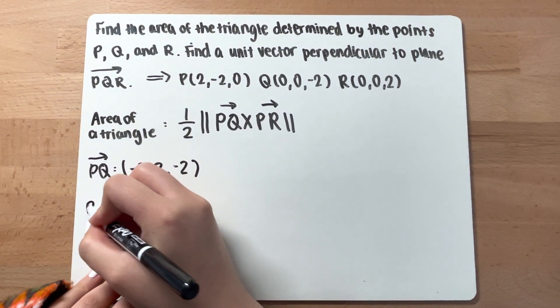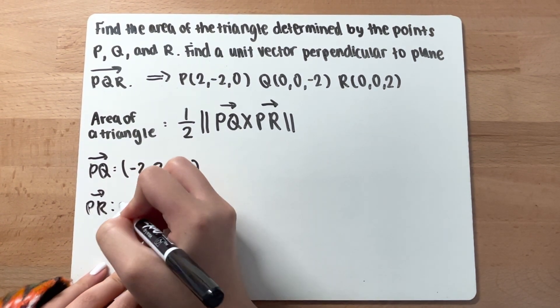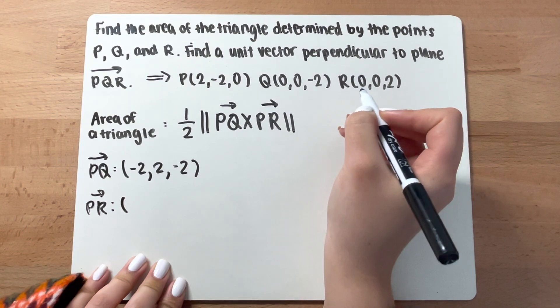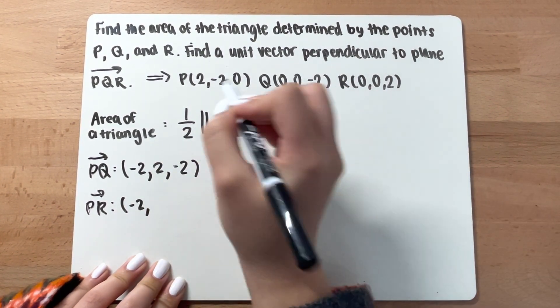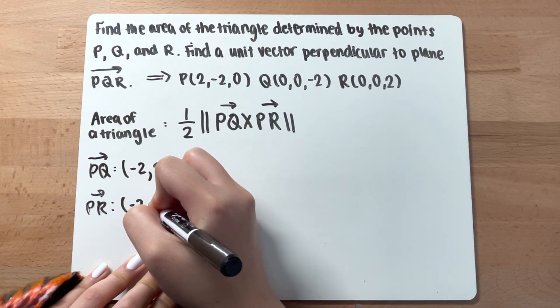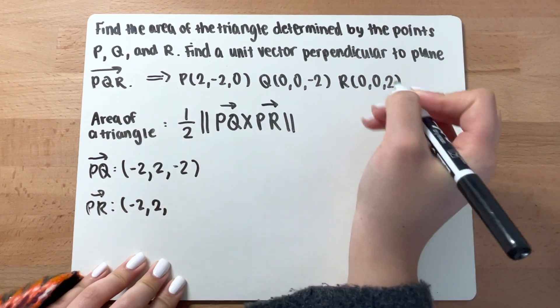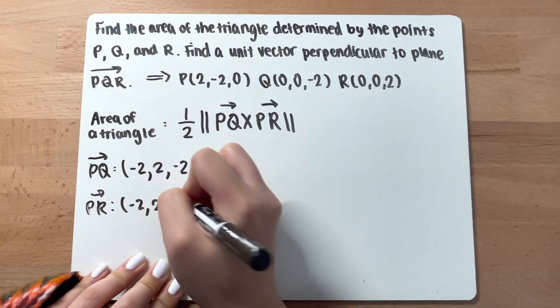Same thing for PR — terminal minus initial: (0 minus 2) = negative 2, (0 minus negative 2) = 2, and (2 minus 0) = 2. So PR = (-2, 2, 2).